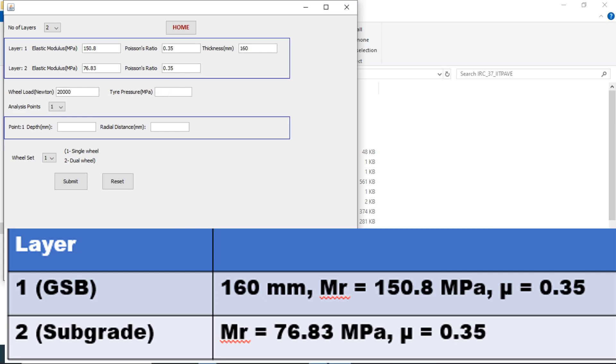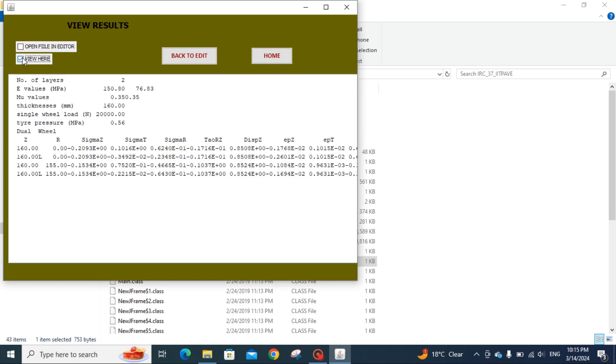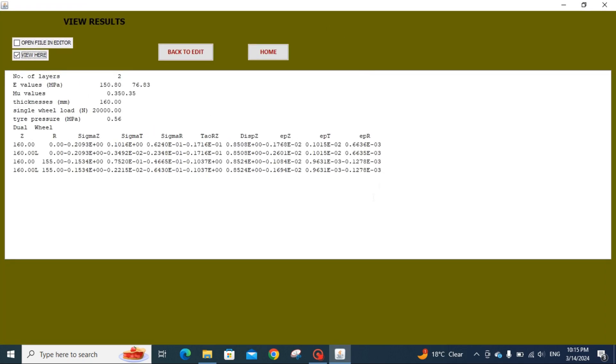Poisson's ratio is 0.35, wheel load is 20,000, tire pressure is 0.56. Analysis point is only two depth at the depth of 160 millimeter, that is the level of subgrade, distance zero. Another one is 160 millimeter, and at a distance of 155 millimeter, dual wheel assembly, and submit the data. Okay, now run the program.